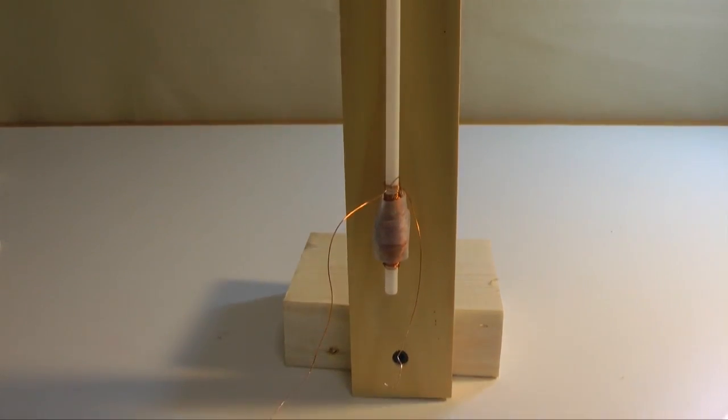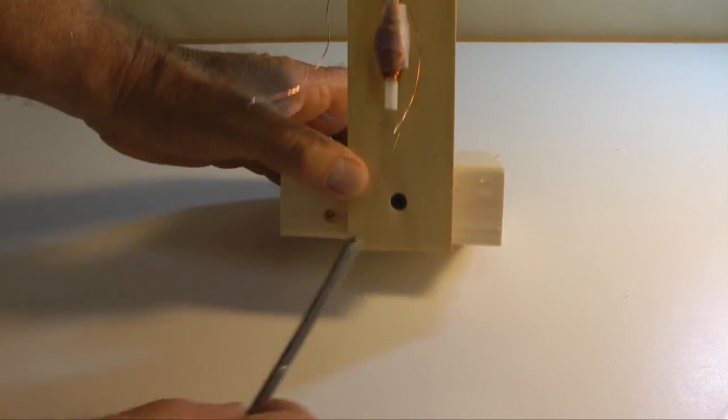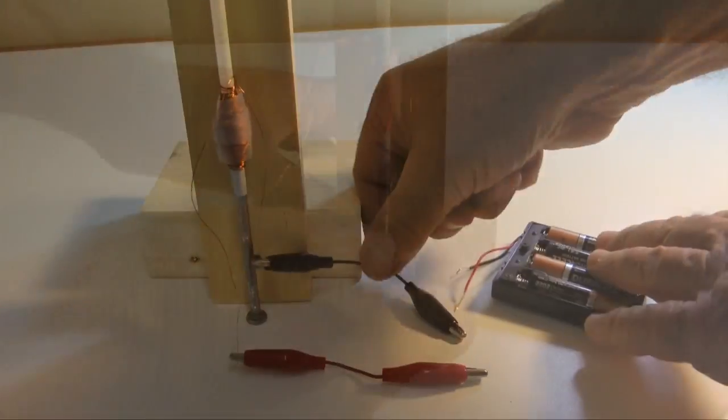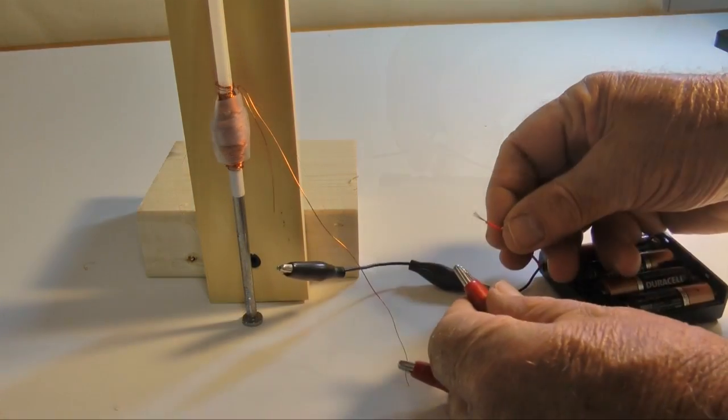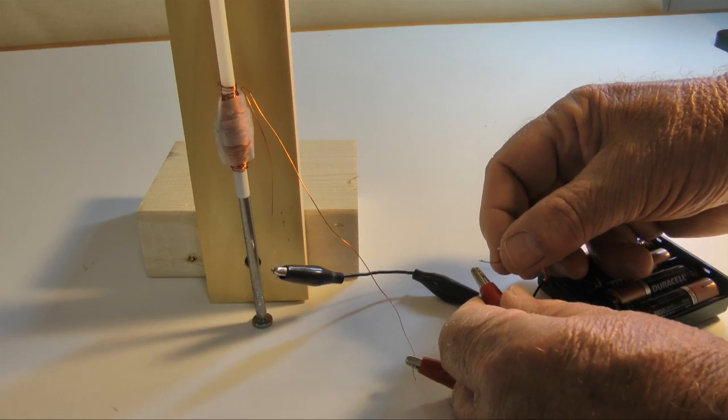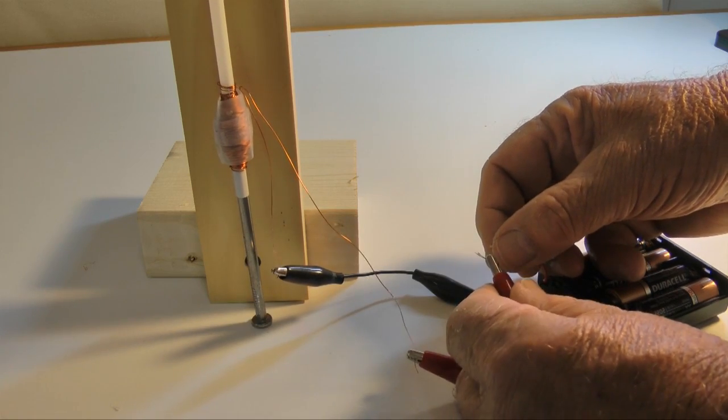Here I've mounted the straw vertically, with the nail extending from the bottom. I'm using 4 AA batteries to energize the coil. Making the final connection, the coil is energized, and the magnetic field lifts the nail.